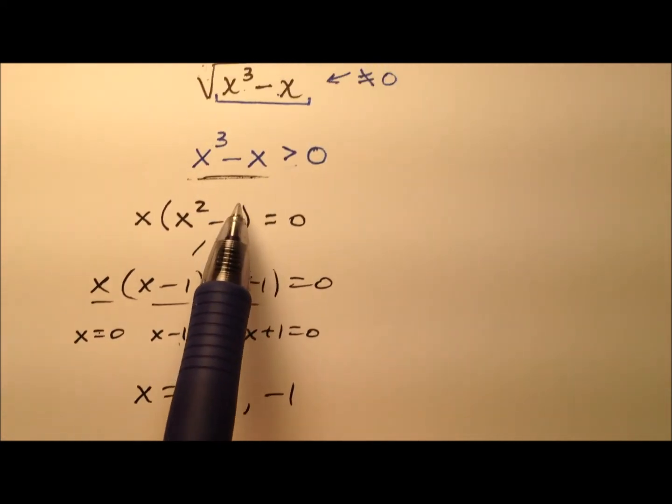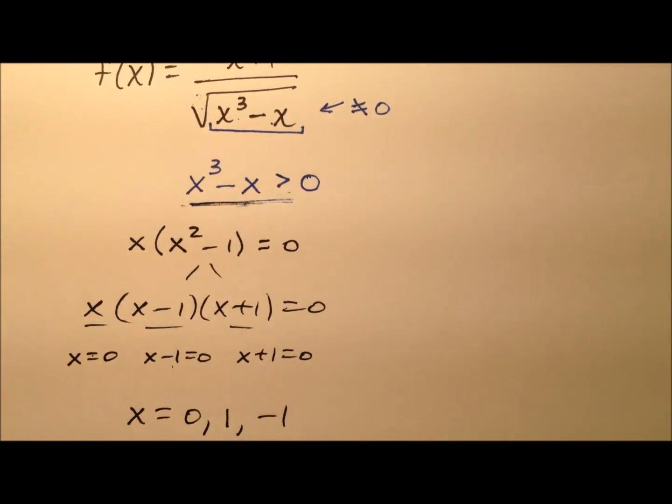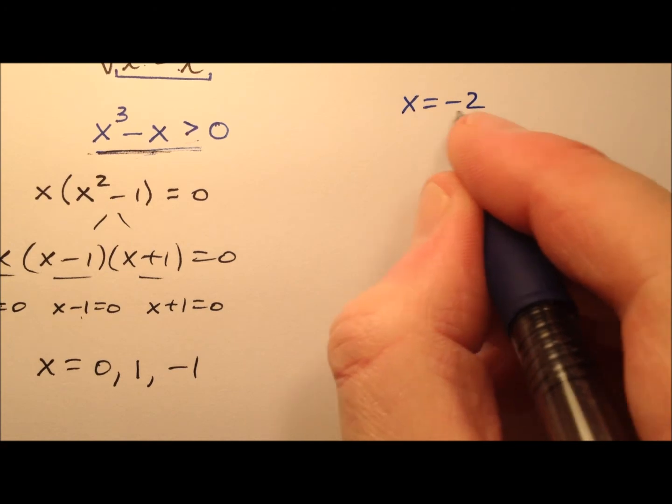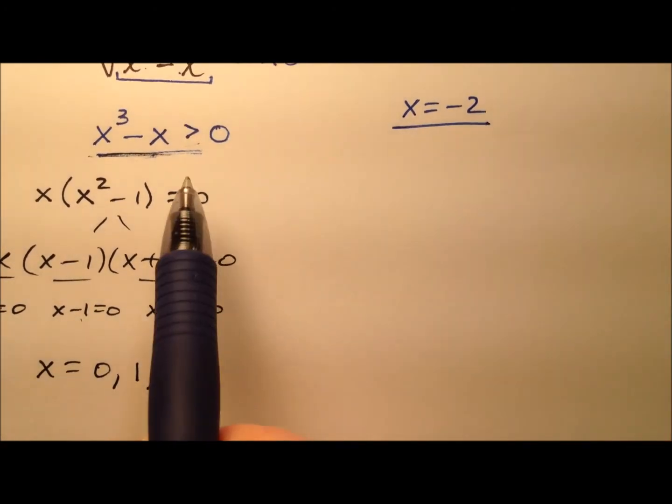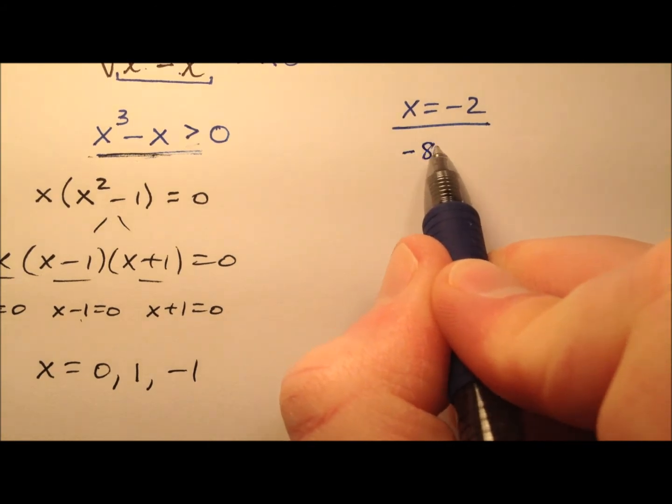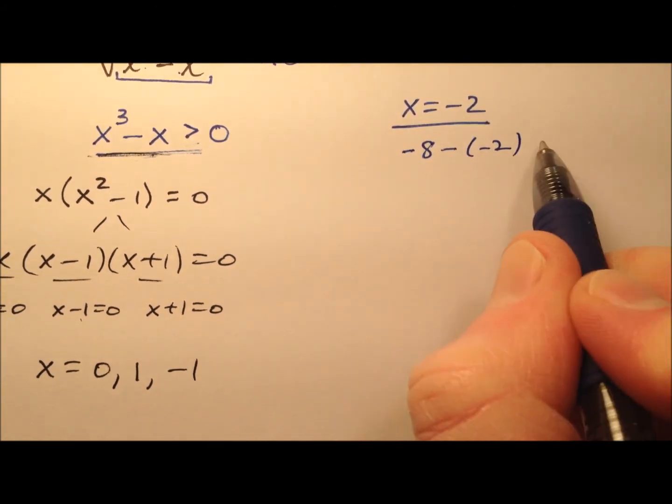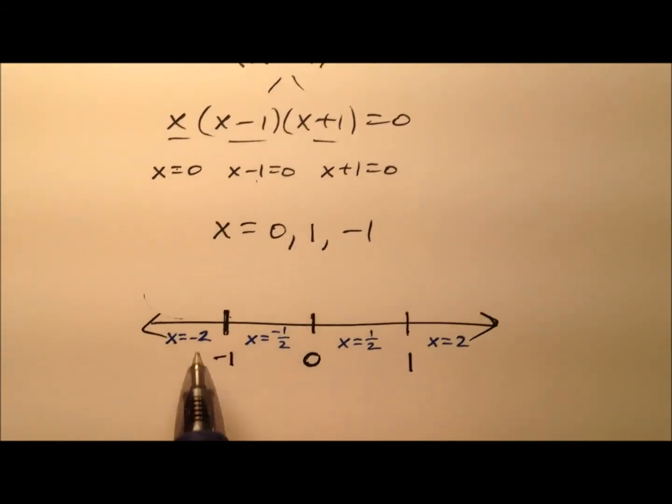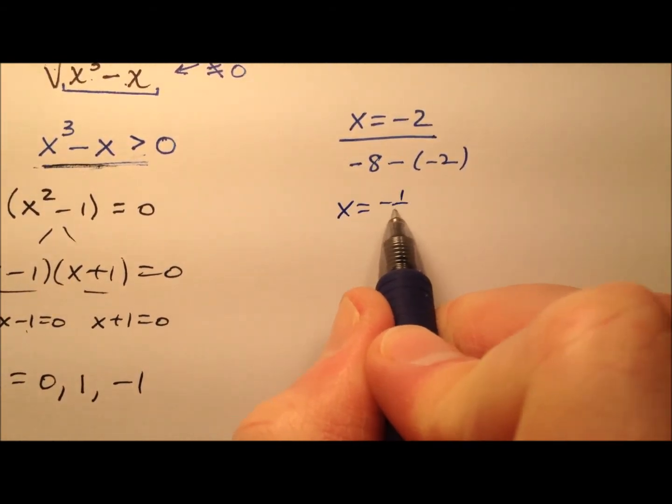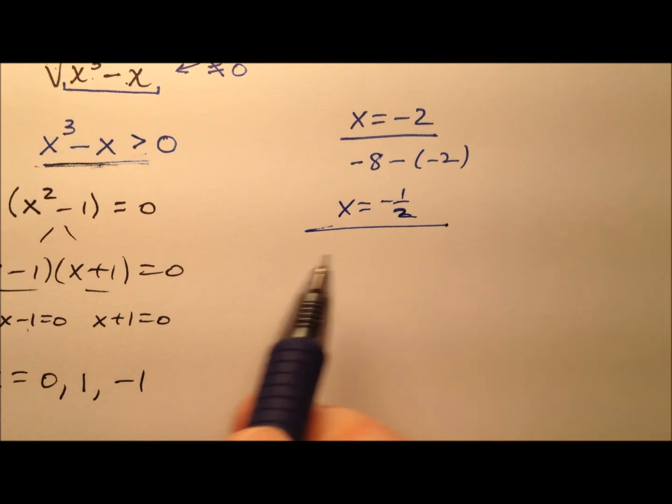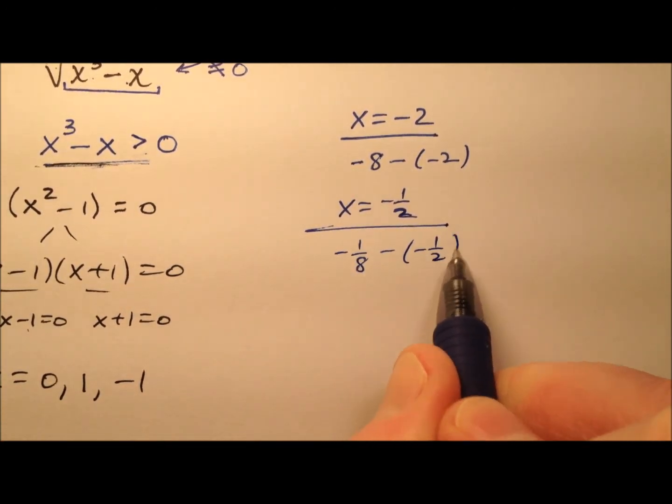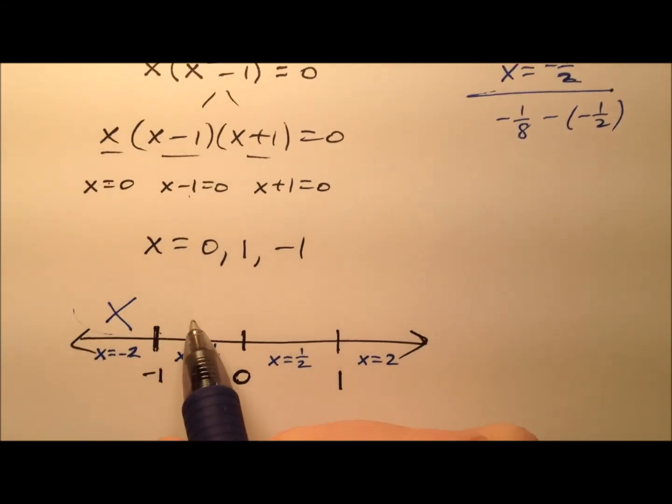Let's plug back into our inequality. We'll start with x equals negative two. We want to make sure it's positive. Negative two cubed is negative eight minus a negative two, and that's going to be negative, so that's no good. How about x equals negative one half? That'll be negative one eighth minus a negative one half, so that'll be positive. That'll be okay.